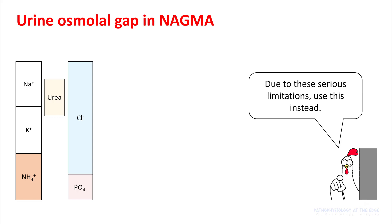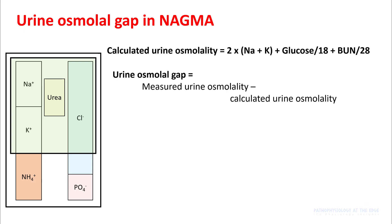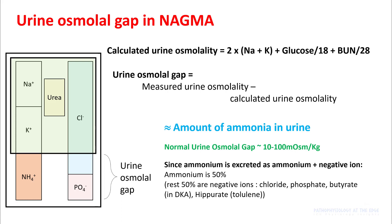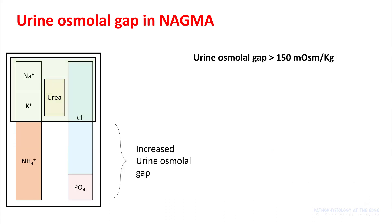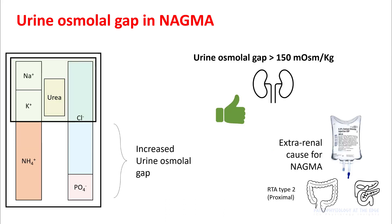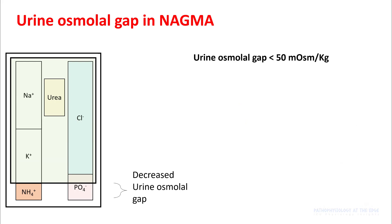The urine osmolal gap in non-anion gap acidosis is much simpler to use. Calculated urine osmolality is similar to calculated serum osmolality: 2 times (sodium plus potassium) plus glucose divided by 18 plus BUN divided by 2.8. Subtracting this from the measured urine osmolality gives you the amount of ammonium ions. The urine osmolal gap ranges between 10 to 100 mOsm/kg and equals the amount of ammonia in the urine. Since ammonium must be excreted with a negative ion, the actual ammonium concentration is about 50% of the urine osmolal gap. A urine osmolal gap greater than 150 indicates an extra-renal cause, while a gap less than 50 suggests a renal cause.